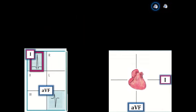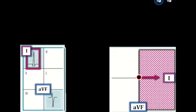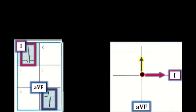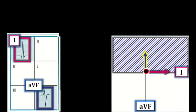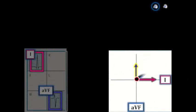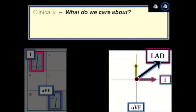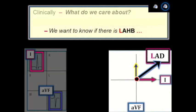To identify LAD using the axis diagram: if lead I is clearly positive, the axis lies within the left hemisphere. If lead aVF is predominantly negative, we draw the blue arrow in the direction of negative lead aVF, putting the axis in the upper hemisphere. The net effect places the axis within the upper left quadrant — meaning there is LAD. Clinically, what we care about is whether the degree of LAD is pathologic, which brings up the issue of how to quickly and accurately recognize the hemiblocks.